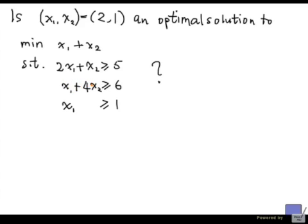The second constraint, I have 2 plus 4 times 1, that's 6. So again, the second constraint is satisfied. And 2 is obviously at least 1. So all the constraints are satisfied by 2, 1. So this is a feasible solution.